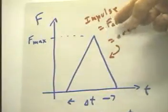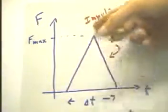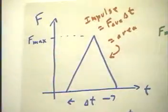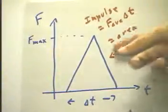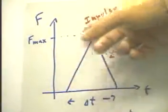And of course, if we multiply the average force times delta T on a force versus T diagram, we're going to get the area under the force versus T curve.